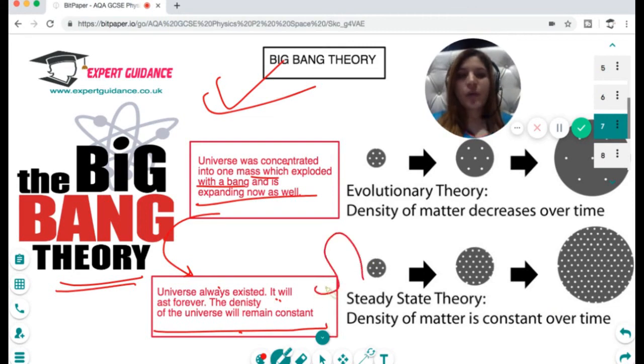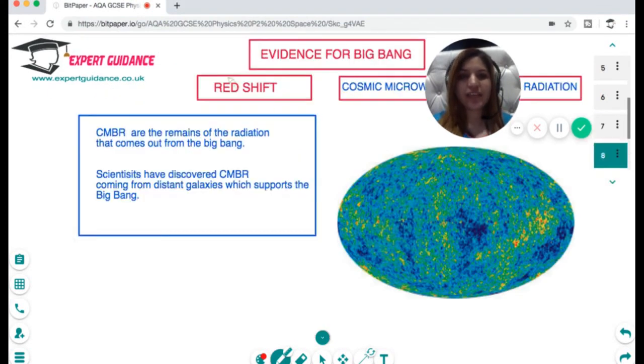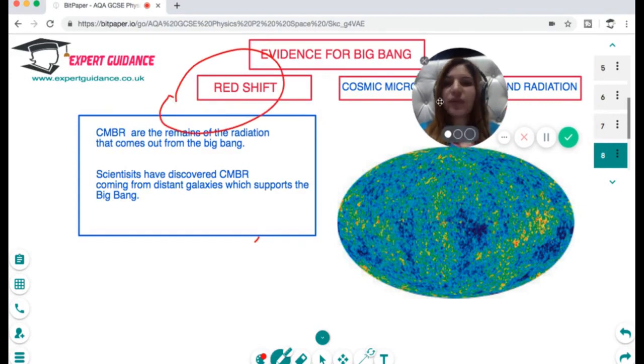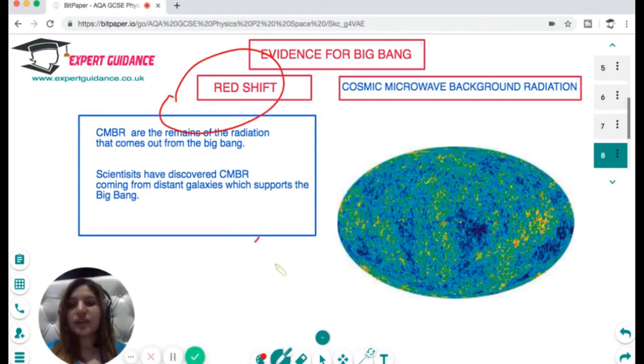There are no evidences for the steady state theory, but we have evidences for the Big Bang theory. What are the two evidences for the Big Bang theory?